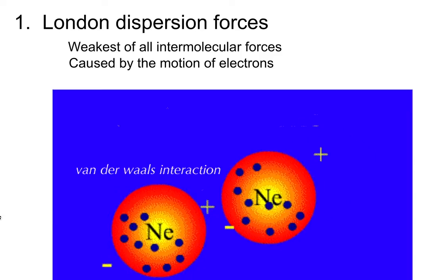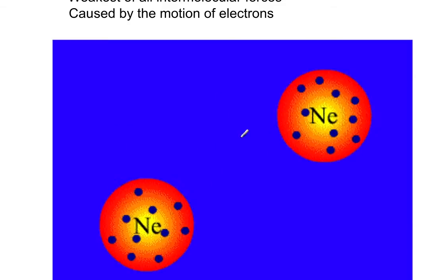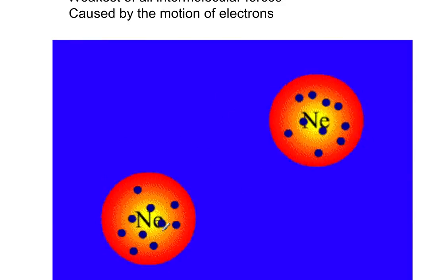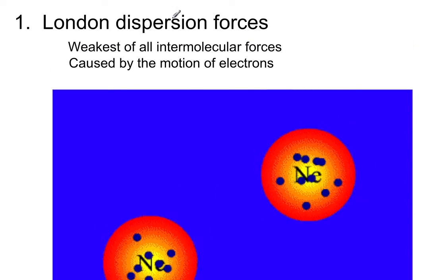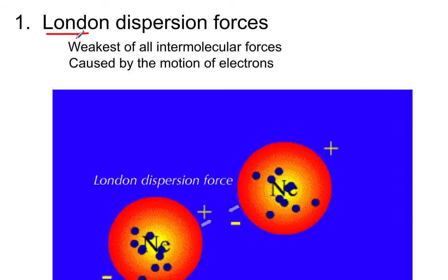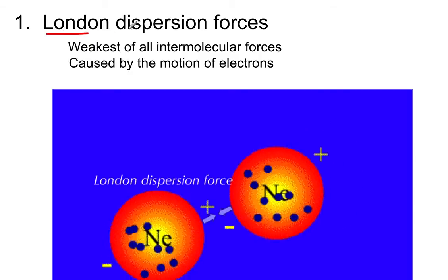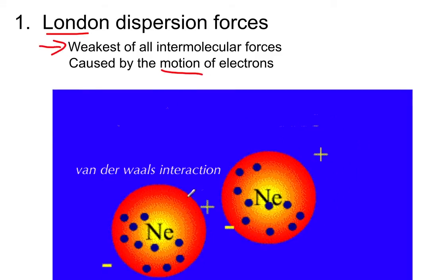Now take a look at the animation here. These are two neon atoms, and notice that as they move, their electrons, the blue dots within the orange atom, the electrons are shifting around. They seem to be shifting so that they end up on the bottom left-hand side of each one of these atoms. The thing to remember here is that these London dispersion forces, sometimes they're just called dispersion forces, they're the weakest of all, and they're caused by the motion of electrons, which you see here.